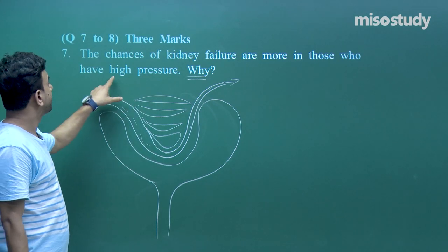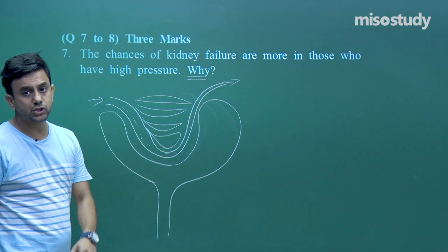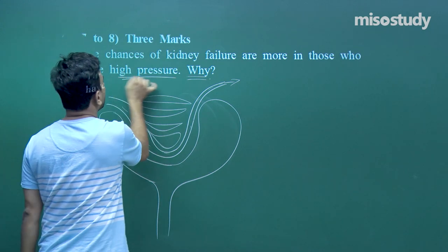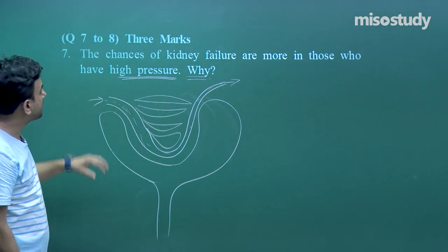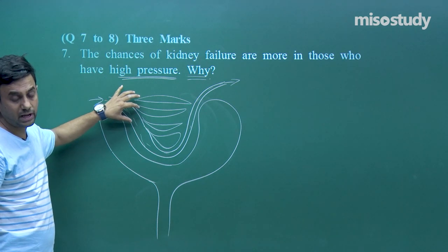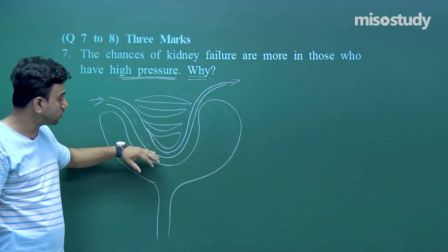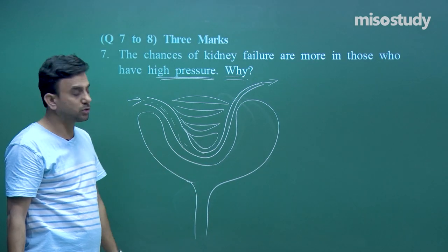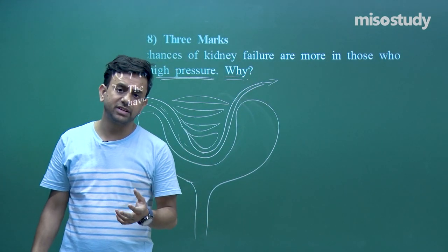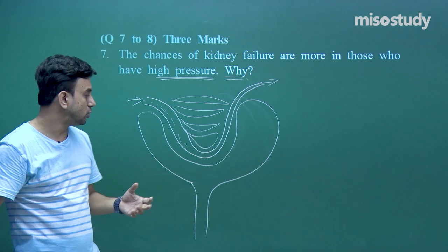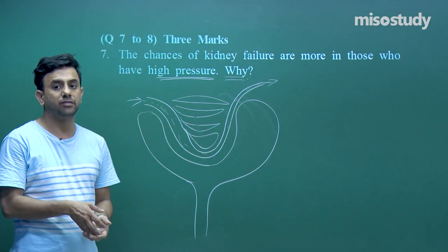If there is high blood pressure, the blood will enter the arteriole at a very high pressure. When it passes through these glomerular capillaries, the high pressure causes these capillaries to disrupt, and hence there will be kidney failure.